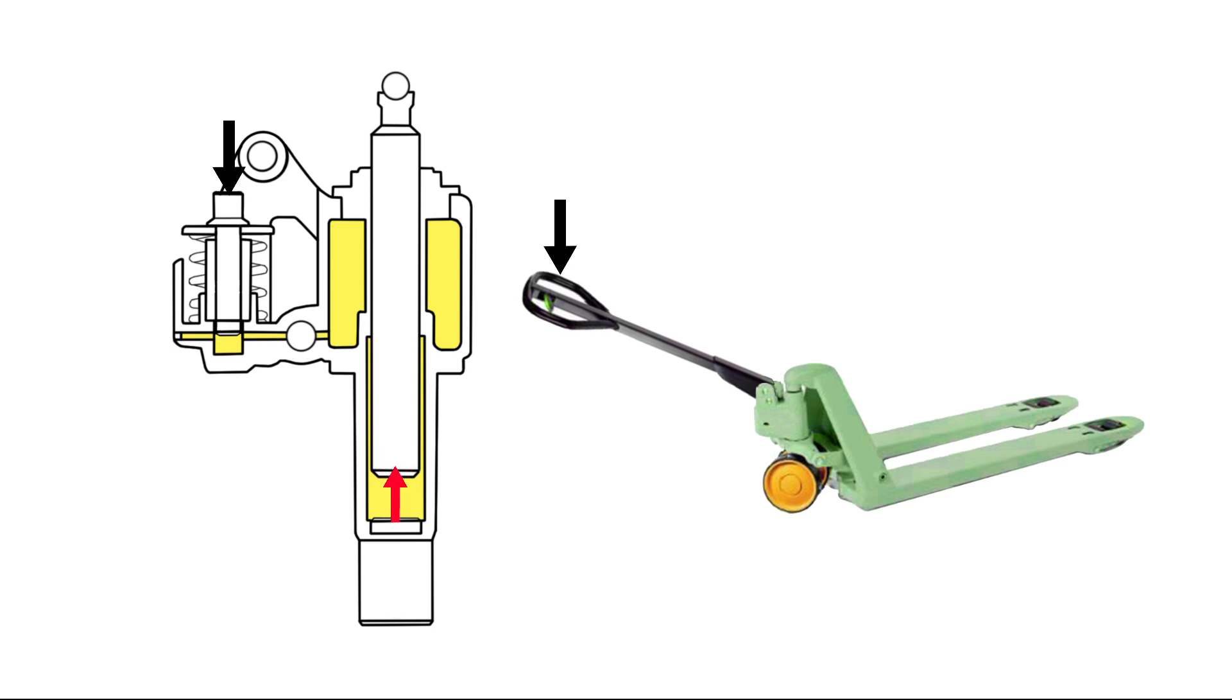The hydraulic cylinder, on the other hand, is equipped with a piston that moves up and down inside a cylinder barrel. The piston has a rod attached to it, which is connected to the pallet jack forks.